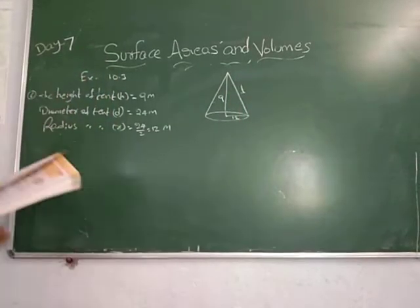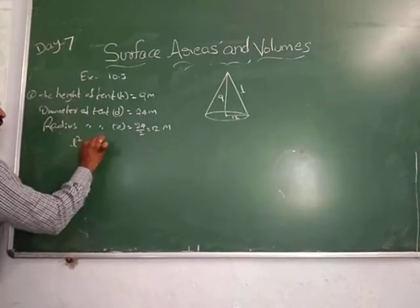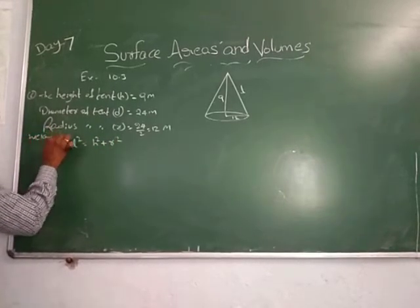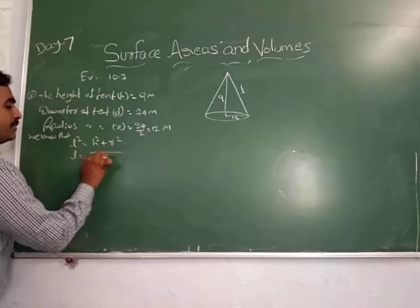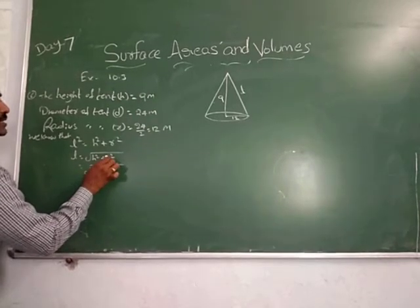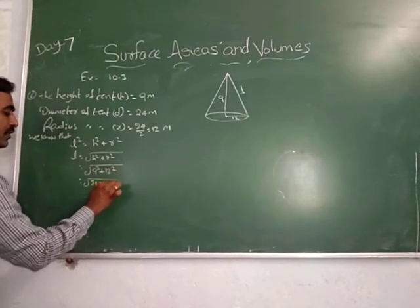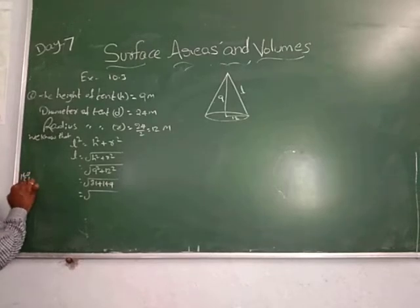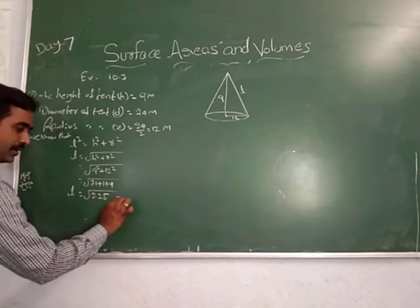We have to find the slant height. The relation among these: L square equal to H square plus R square. Therefore L equal to square root of H square plus R square. That is square root of 9 square plus 12 square, equal to square root of 81 plus 144, that equal to square root of 225. Square root of 225 is 15. So slant height is equal to 15 meters.